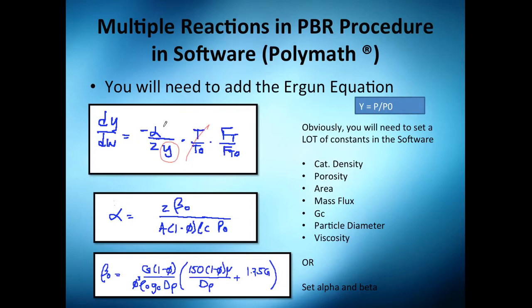Actually, yeah, we have no temperature drop. We have this Y which is the thing we're interested in. Alpha, I will actually set alpha as an equation. I will say alpha equals two times beta zero divided by this, and I will say beta zero equals all these and all these. And I will say the density of the catalyst equals this number, the porosity equals this number, the area equals this number, mass flux equals either this number or, you know, it's mass divided by area.